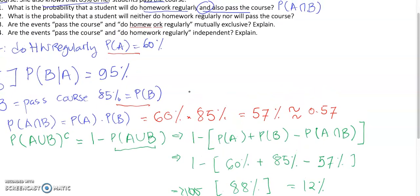100 minus 88 is just 12 percent. So, we can say that the probability that a student will neither do homework nor will pass the course is 12 percent.